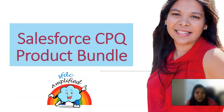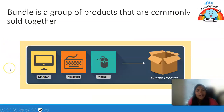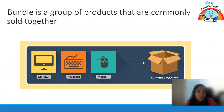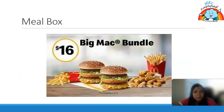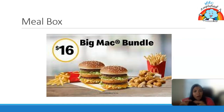In this video we will learn about Salesforce CPQ product bundle. A product bundle is a group of products that are commonly sold together. We can take the example of a laptop — monitor, keyboard, and mouse all coming together. Another real-time example is a meal box where chips, fries, and burger all come in a particular bundle.